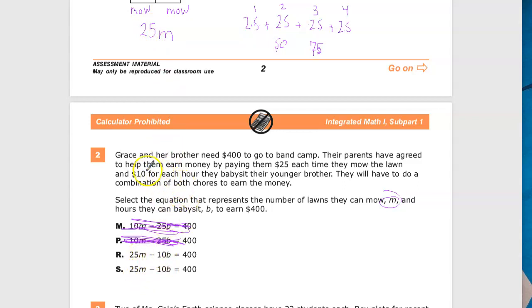The same thing happens, incidentally, with babysitting, for each hour of babysitting. It's 10 for babysitting, and each hour they define in the question itself as b. So, all I have to do is figure out, well, how do I combine those two together, or what do I do to make it end up at the 400 that I need?